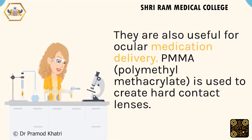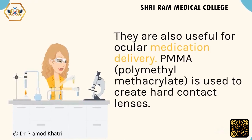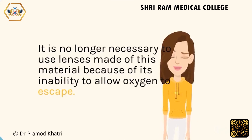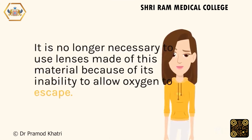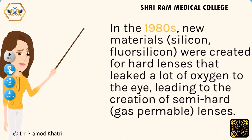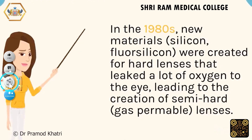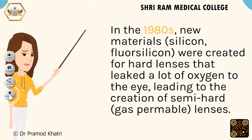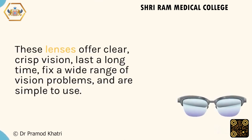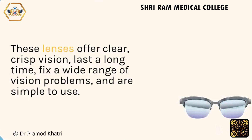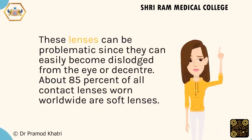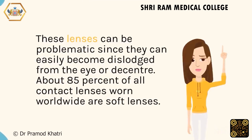TMA was used to create early hard contact lenses, but it is no longer commonly used because of its inability to allow oxygen to pass through. In the 1980s, new materials — silicone and fluorosilicone — were created for hard lenses that allowed more oxygen to reach the eye, leading to the creation of semi-hard, gas permeable lenses. These lenses offer clear, crisp vision, last a long time, fix a wide range of vision problems, and are simple to use. However, they can be problematic since they can easily become dislodged or decentered from the eye.